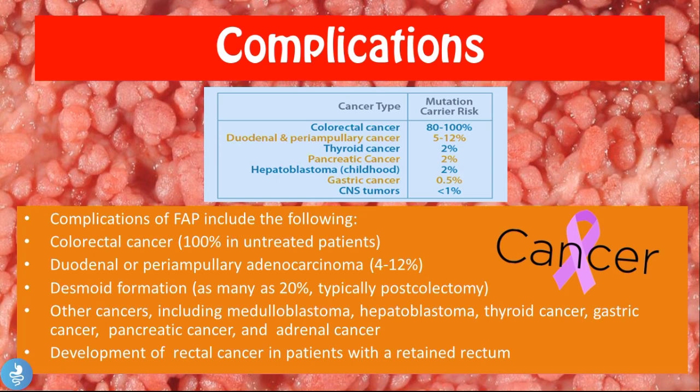The complications of FAP include colorectal cancer, which occurs in 100% of untreated patients; duodenal or periampullary adenocarcinomas, which occur in 4 to 12% of patients; and desmoid formations in as many as 20% of patients, typically post-colectomy — meaning after the colon has been resected.